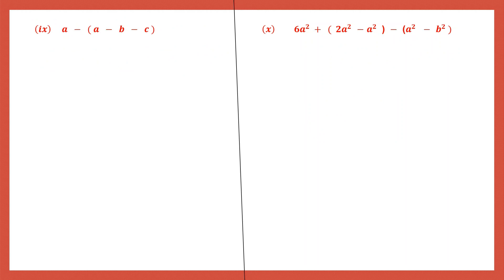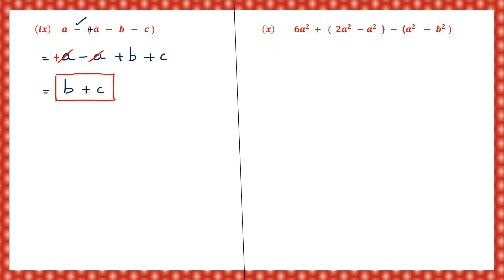Question 9: the first term remains the same. Before we open the brackets, check the sign - it's minus. So the sign of all the terms inside will change: plus a becomes minus a, minus b becomes plus b, minus c becomes plus c. Now plus a and minus a get cancelled - that is 0. So what is left is b plus c. Since b and c are unlike terms, I cannot add them together, so they will remain as b plus c. That's the answer.